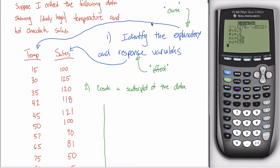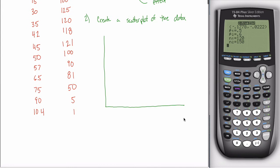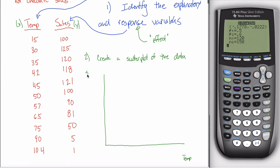So instead of labeling this as explanatory, if you wanted to label this with an x, that's fine too. And instead of labeling this as your response variable, you could label it with y. So the point is on my x-axis down here, I have temperature, and on my y-axis, I have sales.